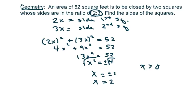So the sides of the first square, all I'm going to do is plug in 2, equals 4, and the sides of the second square is 3 times 2, which equals 6.